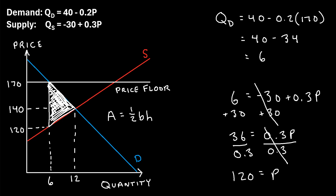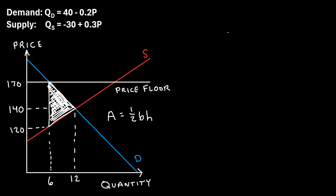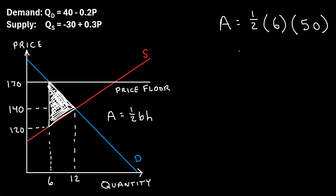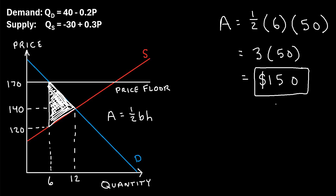So now we have everything we need to calculate the area of this triangle. The area equals one half times the base times the height: one half times 6 times 50. One half of 6 is 3, and 3 times 50 is 150. So the total deadweight loss is $150. This represents the sum of all of the transactions that would have occurred in a free marketplace at the equilibrium price and quantity, but are no longer occurring because the price floor is set so high. That was a quick example of how to calculate deadweight loss.